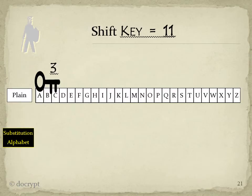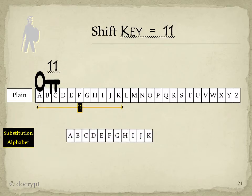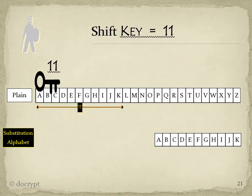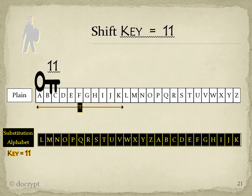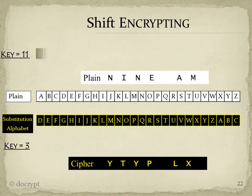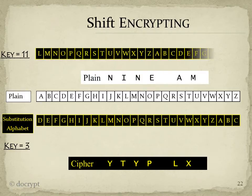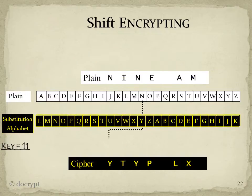We'll make a shift 11 substitution alphabet the same way we made a shift 3. Count out 11 letters, a to k, shift them to the back, everything else gets put in the front. And we have a shift key 11 substitution alphabet. We'll pull the key 11 down, replace the previous substitution alphabet with this one, and encryption works just the same way as before.